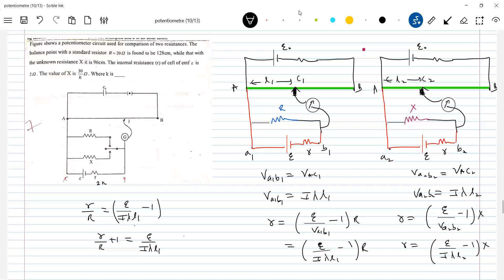So the value E by I lambda should be equal to L1 into R. I'll get the ratio of E by I lambda. So this value I can substitute here and work out. I'll get the value of x, so x will be 30 by 7.